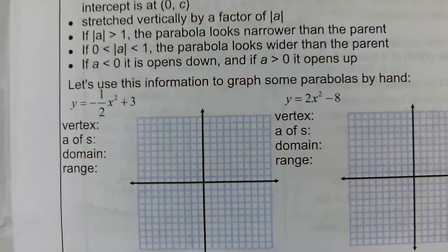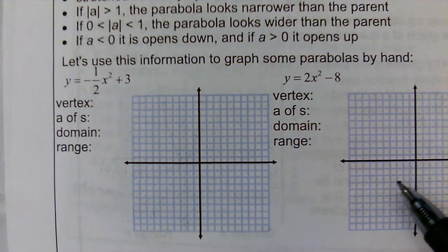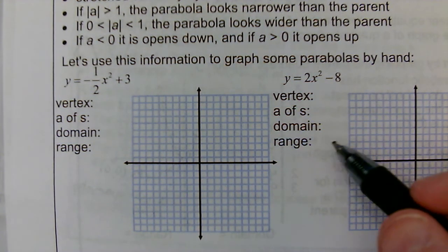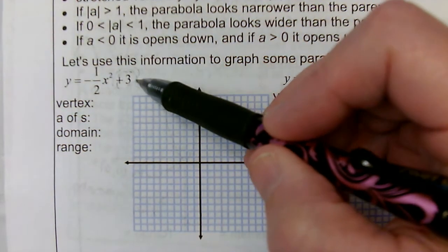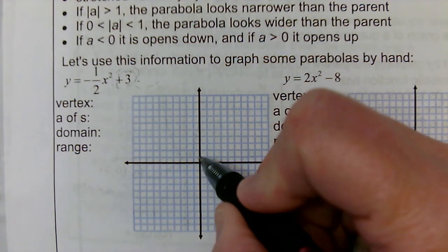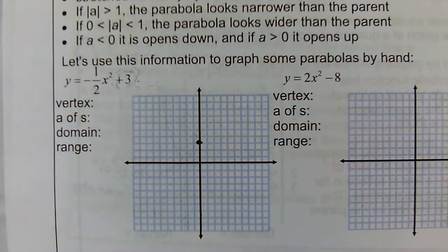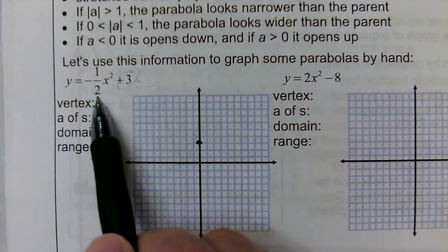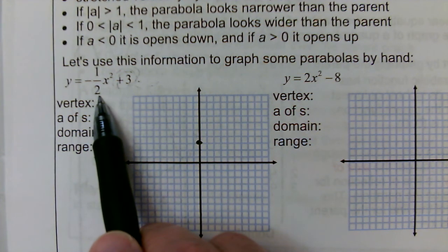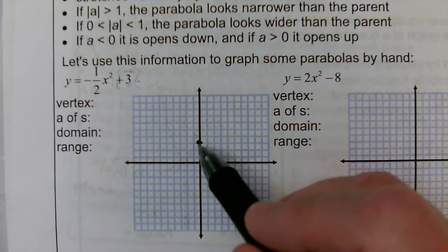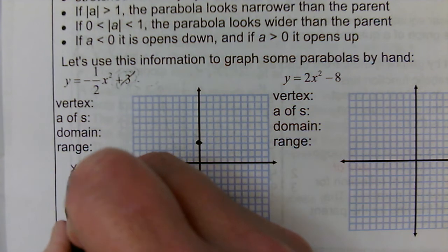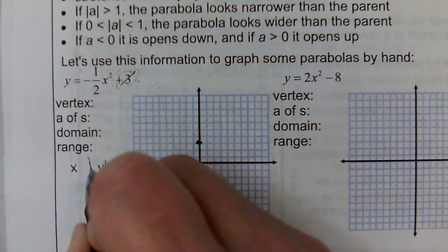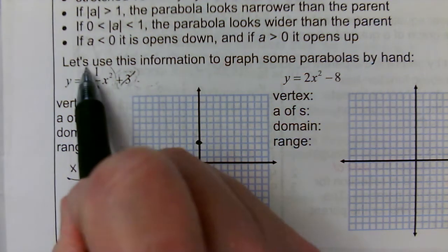So if I look at an equation like y equals negative one half x squared plus 3, I always want to take care of the shifting first. The change in the vertex is going to go up 3. Then the negative one half is going to flip my parabola upside down and multiply the y values by one half. Once I've figured out where the vertex is, I can ignore the plus 3 part. I'm going to think of y prime as just this negative one half x squared.